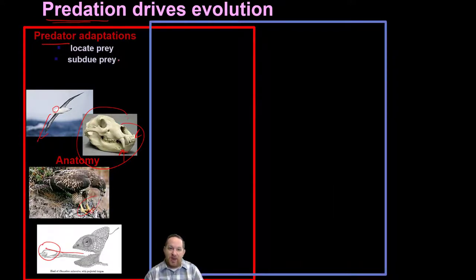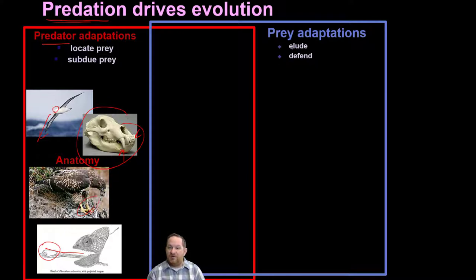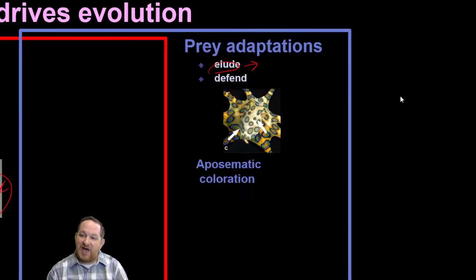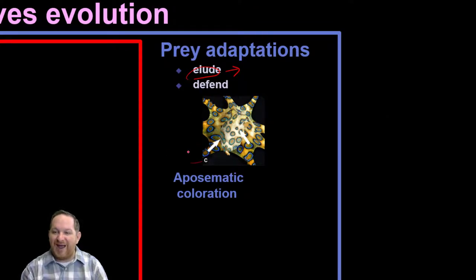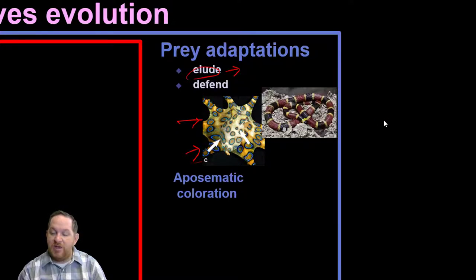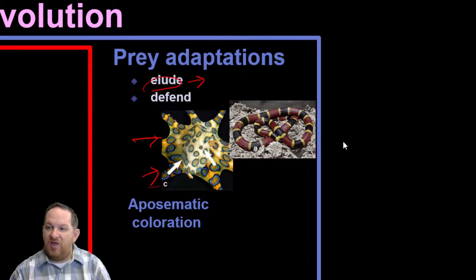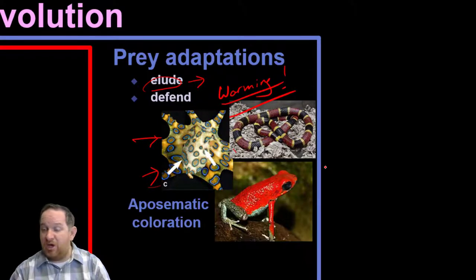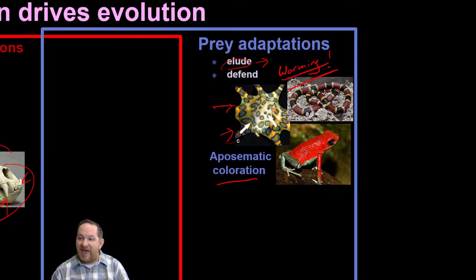What about adaptations for prey? If you are being hunted, you want to elude, get away, or defend. One way prey have adapted is aposematic coloration — really bright colors that warn off predators. You can see this coloration in this octopus. If you're a predator of an octopus and you see this bright coloration, you'd want to avoid it. The same with a venomous coral snake — this bright coloration is a warning to predators to stay away. With these frogs and toads, that bright color is a warning. We call it aposematic coloration.